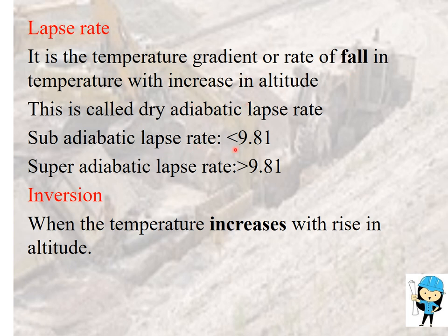If the fall in temperature is less than 9.81 degrees Celsius per kilometer with increase in altitude, it is called sub-adiabatic. If it is greater than 9.81 degrees Celsius per kilometer, it is called super-adiabatic. Lapse rate is opposite to inversion. Inversion means temperature increases with increase in altitude. If the temperature remains constant with increase in altitude, it is called an isothermal process.